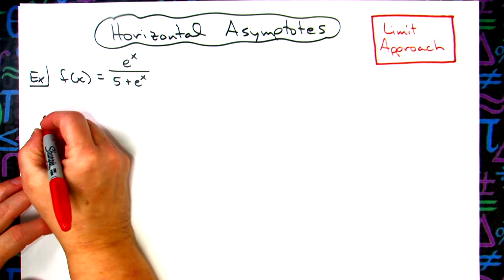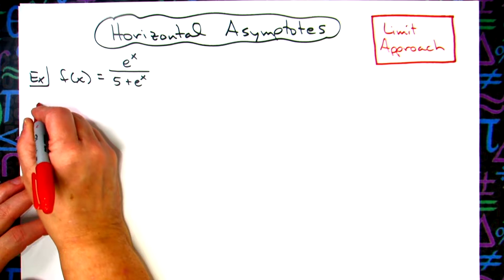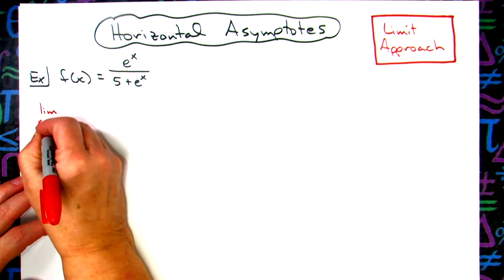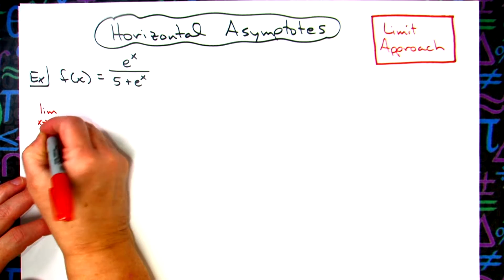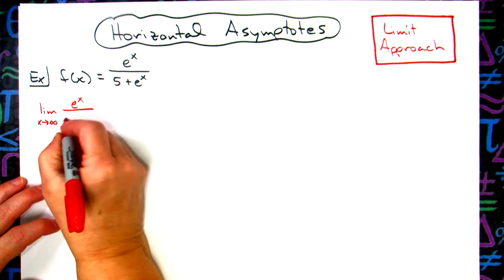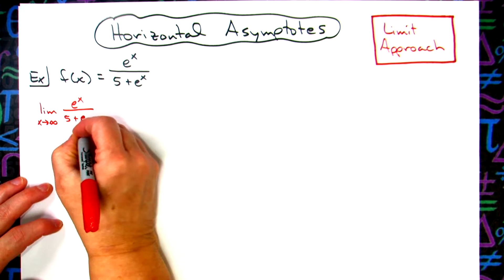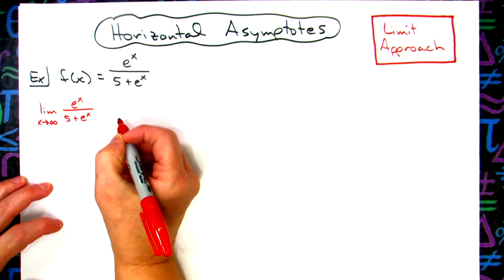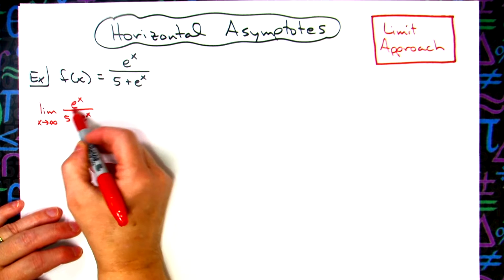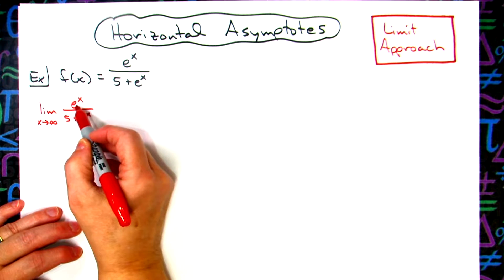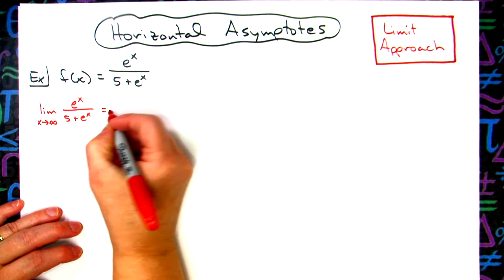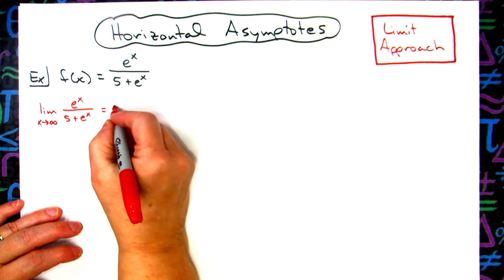For x approaching infinity, we'll have the limit as x approaches infinity of this function: e to the x over 5 plus e to the x. The first thing I'm going to do is take the e to the x that's in the numerator and move it down to the denominator, making that e to the negative x.